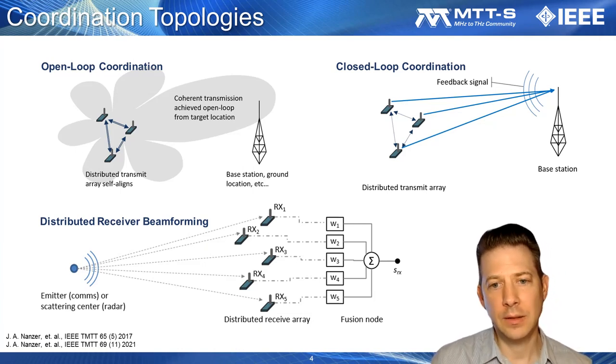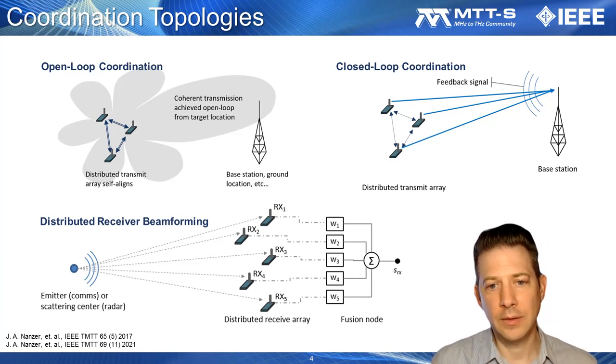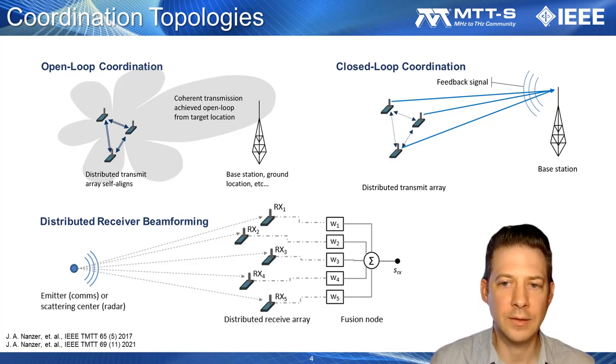However, the necessity of the feedback from the destination rules out applications like remote sensing or radar, where feedback, if it is present, is generally not sufficient to aid in the coordination process. Open-loop distributed arrays, in contrast, self-align without feedback from the destination, and so any wireless operation is possible, including remote sensing.